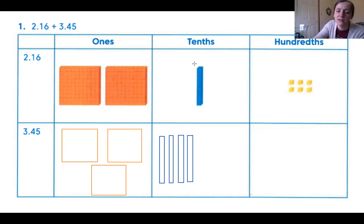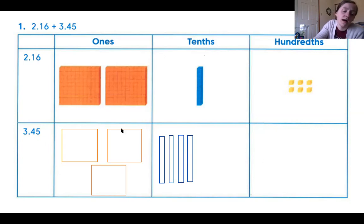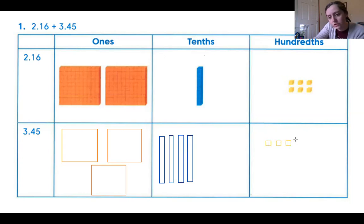If you're drawing a rod, it just needs to look thinner and kind of like a rod. Then lastly, I'm going to draw the five hundredths in yellow — five little squares, which in real life would be five little cubes.